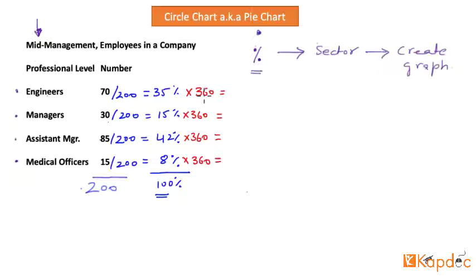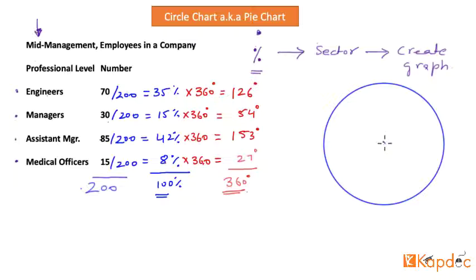Once you do this math, you'll find out the sector size for each data element. Here is a circle. I'm going to divide this circle into four parts such that each sector equals the angle we just calculated for each data element. Let's start with engineers first: 126 degrees.